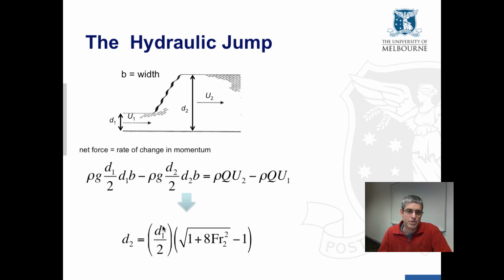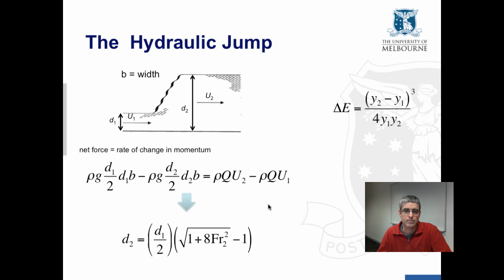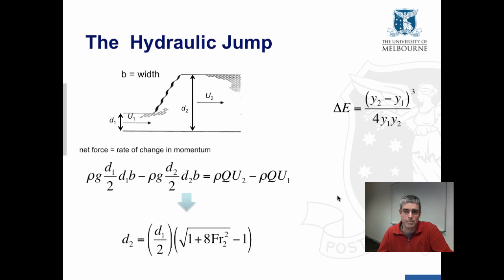D2 is a function of D1 — it's proportional, where the constant of proportionality is a function of the Froude number at upstream of the jump squared. It's also possible using the energy equation to calculate the energy loss across the hydraulic jump, and that's given by this equation. Your texts work through this step by step.